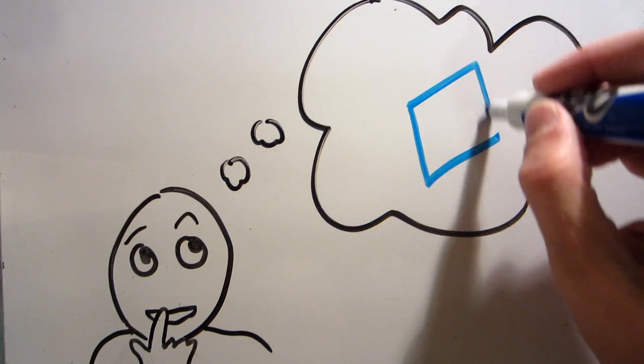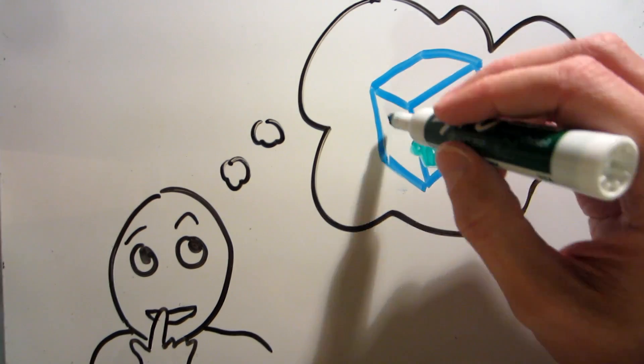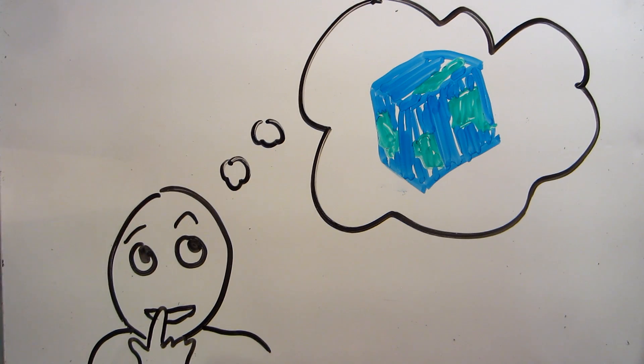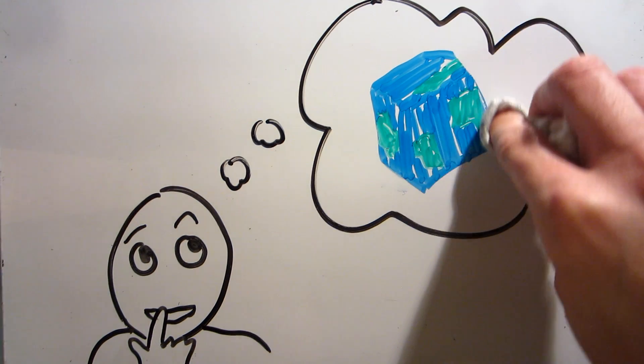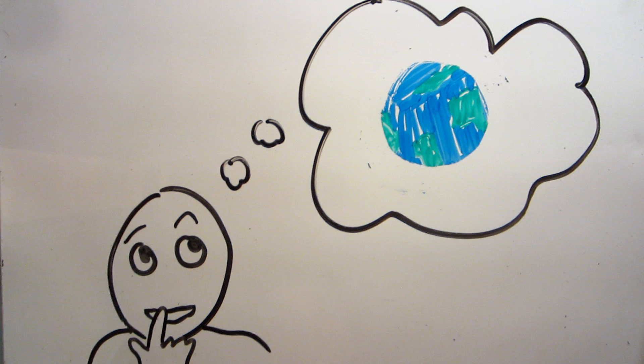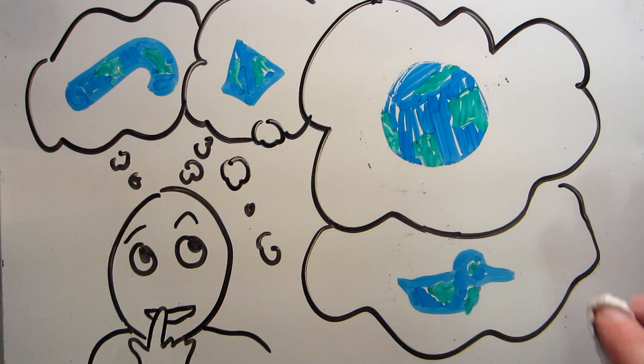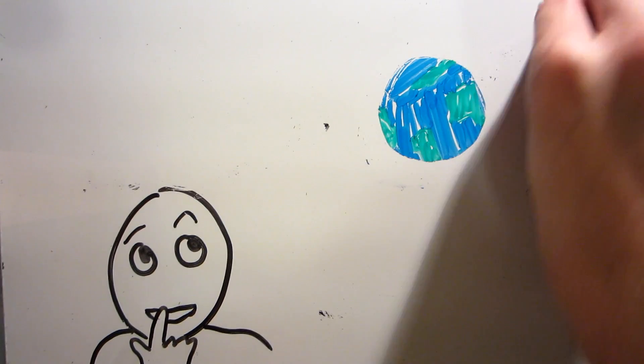Going back to planets, someone who doesn't understand how they form might imagine that the Earth could have been a big cube instead of a ball. Well, we know that even if the Earth somehow ended up cube-shaped, the force of its own gravity would soon pull it back into a ball. So, this person might be amazed that the Earth is round, rather than any of a million other shapes they can imagine, when in reality all planets are basically round, and this is nothing special.